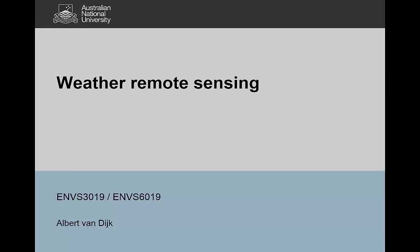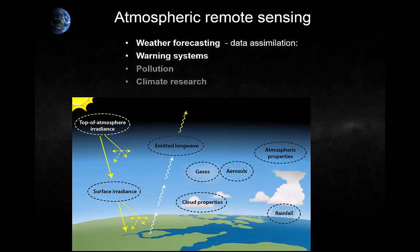Hello, this is Albert van Eyck and in this little video I want to talk a bit about atmospheric remote sensing, particularly weather remote sensing as opposed to climate or air pollution remote sensing. Here's a diagram that shows some of the properties and constituents of the atmosphere that interact with sunlight and with radiation emitted from the land. We've got the irradiance coming in from the Sun, the surface irradiance that is reflected, and then we have the long-wave emissions from the surface according to Planck's law in the typical infrared domain and beyond.